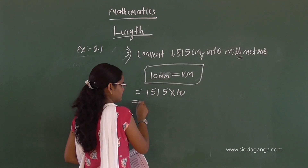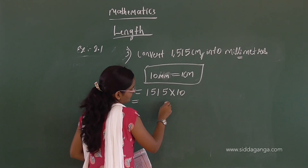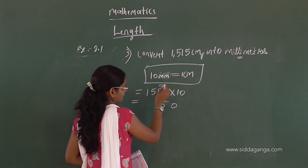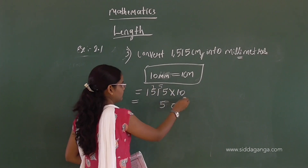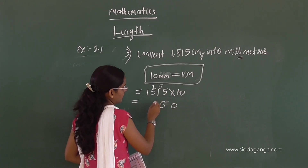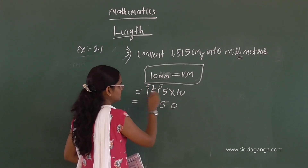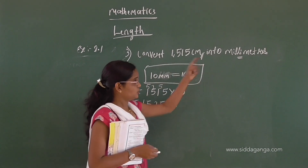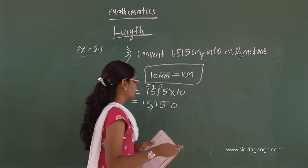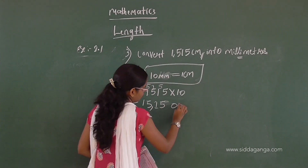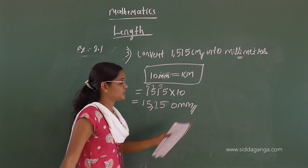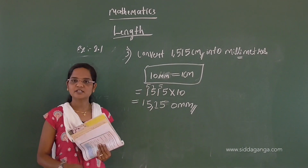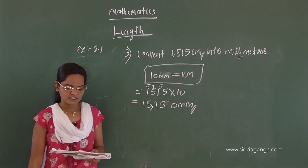Multiplying: 1515 into 10. Ten fives are 50, carry 1; ten ones are 10 plus 5 is 15; ten fives are 50 plus 1 is 51; ten ones are 10 plus 5 is 15. So the answer is 15150 millimeters. When converting, decide whether to multiply or divide based on whether you are going to a smaller or larger unit.